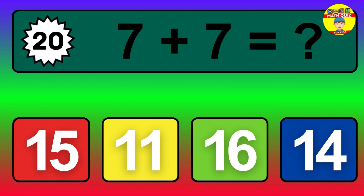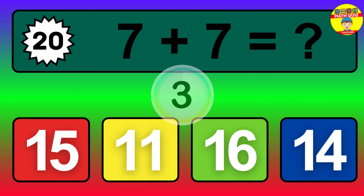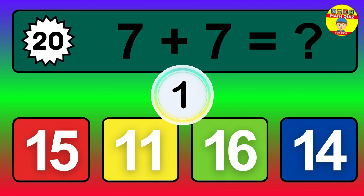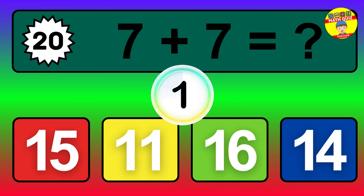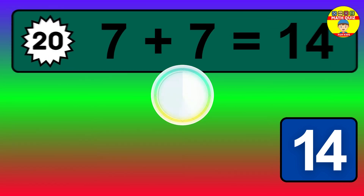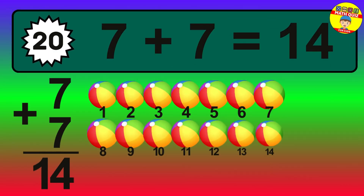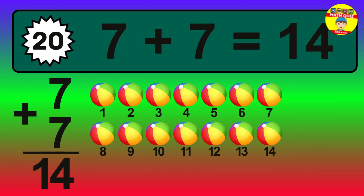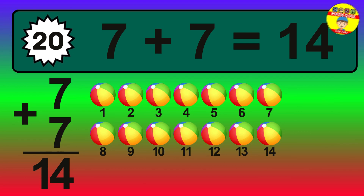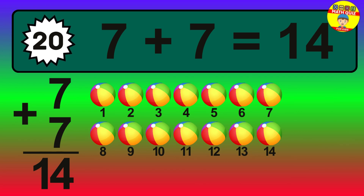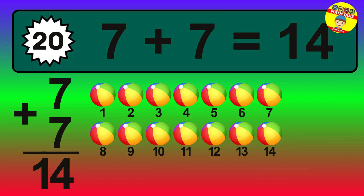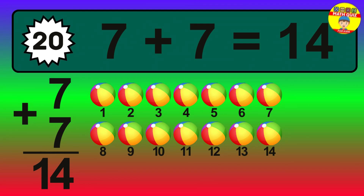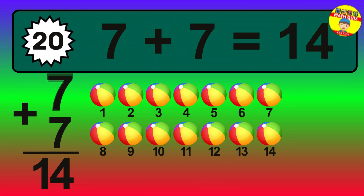Question 20. 7 plus 7 equals what? The answer is 7 plus 7 is 14. Let's count it: 1, 2, 3, 4, 5, 6, 7, 8, 9, 10, 11, 12, 13, 14.